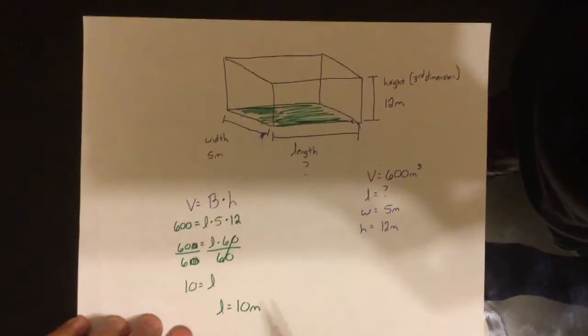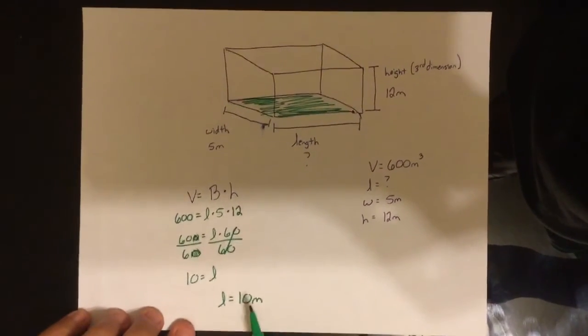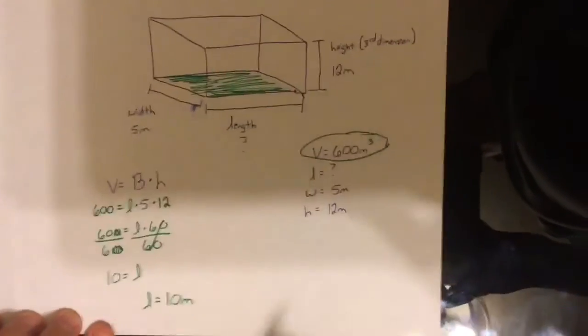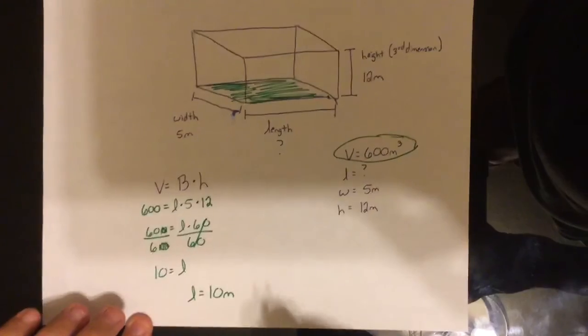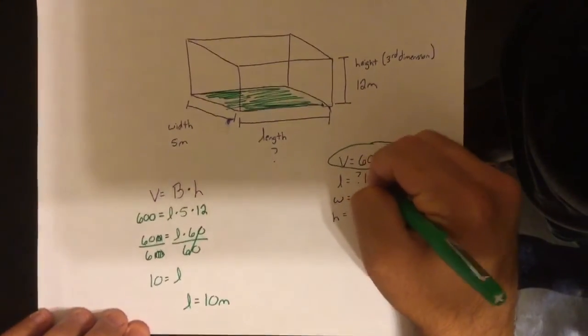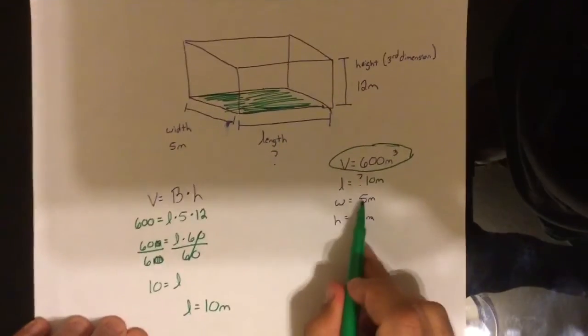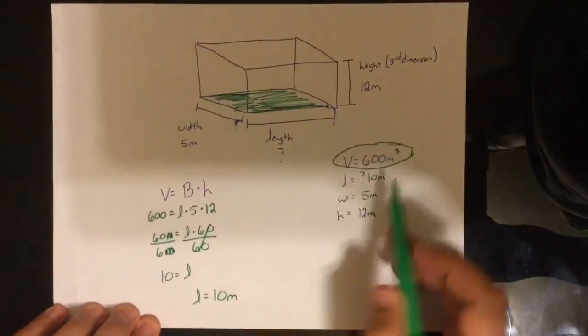So your length is equal to 10 meters. Again, it is not cubed because we didn't solve for volume. If you notice my volume here is cubed. Now, I want you all to notice one other thing. The height was 12 meters. The width was 5 meters. The length was 10 meters.